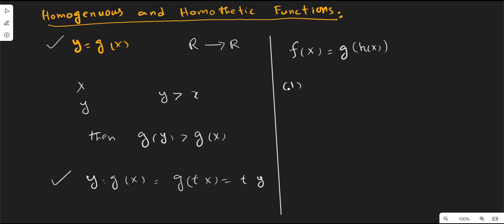Two important points must be noted. The first point is that the factor input ratio in both the homogeneous function and the homothetic function remains constant. The factor input ratio, both in the homogeneous of degree 1 and in the homothetic function, remains constant.